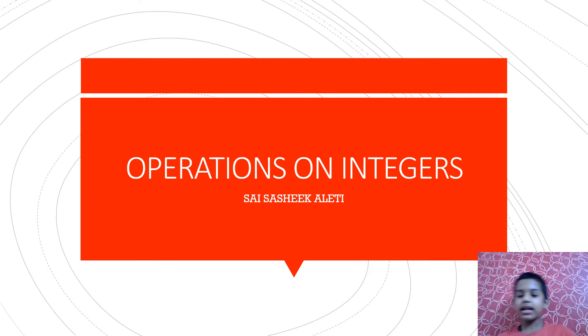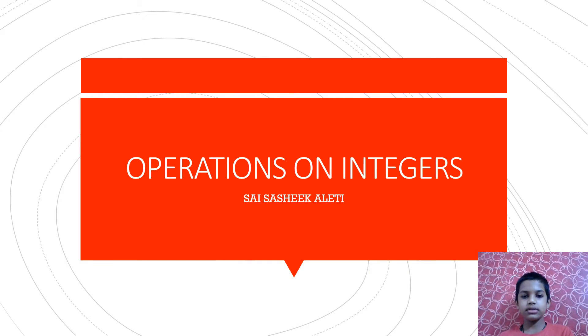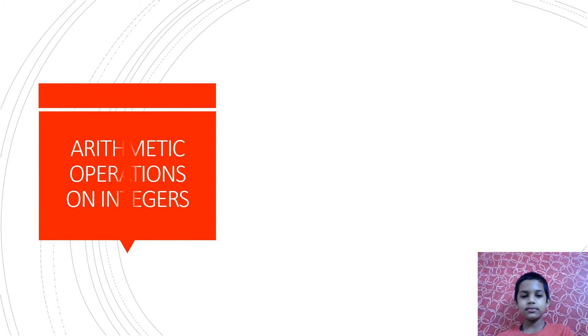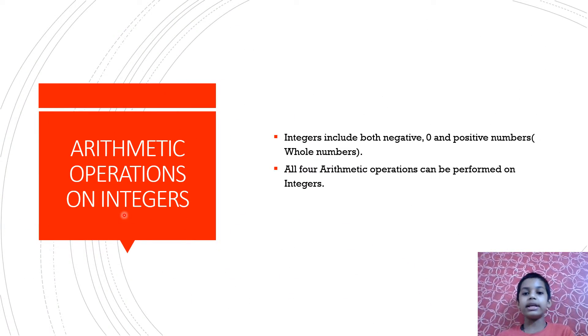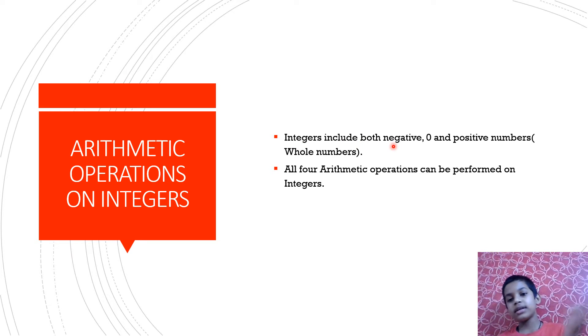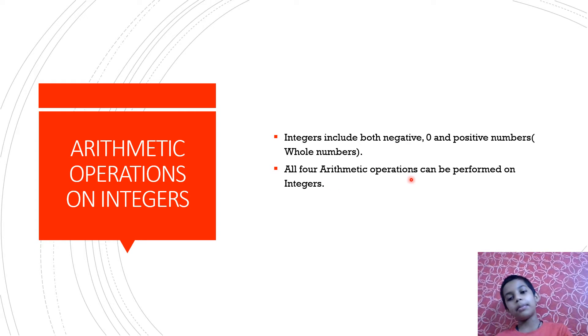Hello guys, welcome back. Today let's learn about arithmetic operations on integers. Integers include both 0, positive numbers and negative numbers. All four arithmetic operations can be performed on integers.